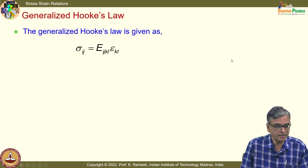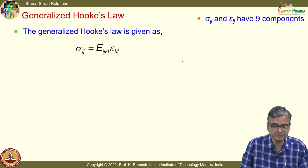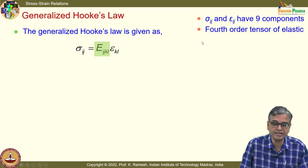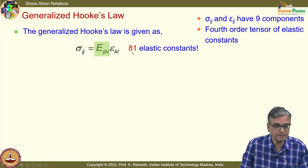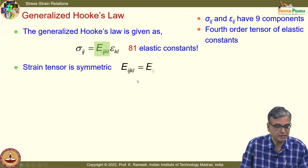For the generalized Hooke's law of anisotropic materials, we have 9 stress components and 9 strain components, so you might think 81 elastic constants are required. We write σ_ij = E_ijkl, the elasticity tensor of rank 4. If the strain tensor is symmetric, this reduces to 54 elastic constants. If the stress tensor is also symmetric, it reduces to 36.